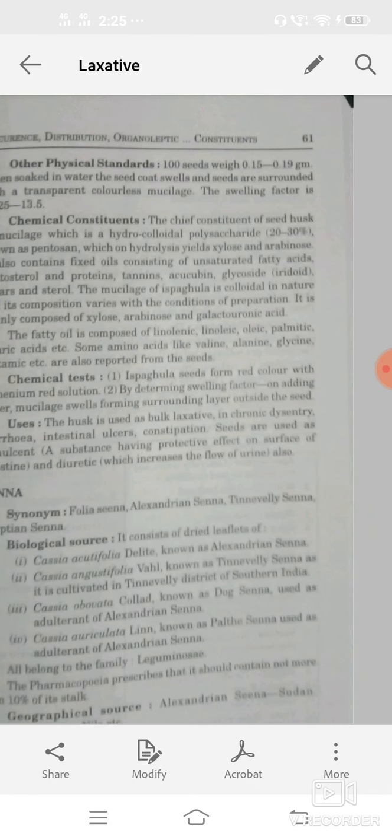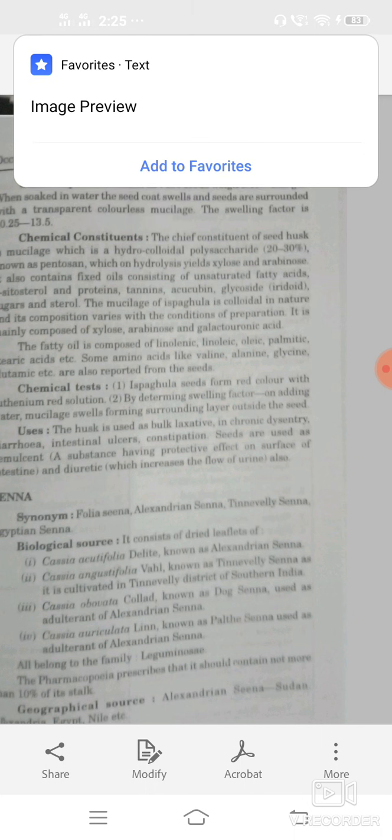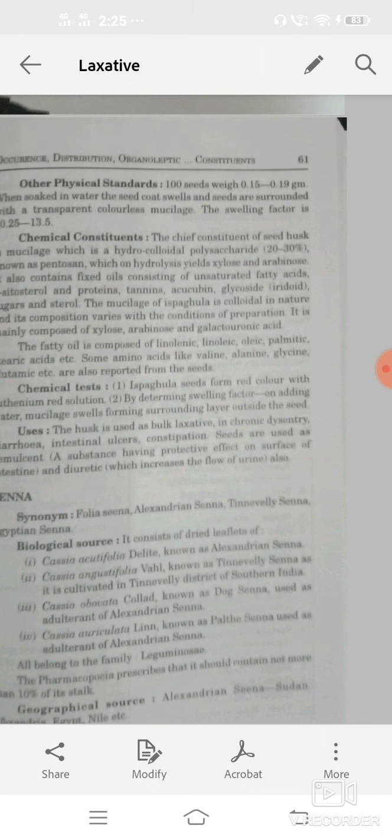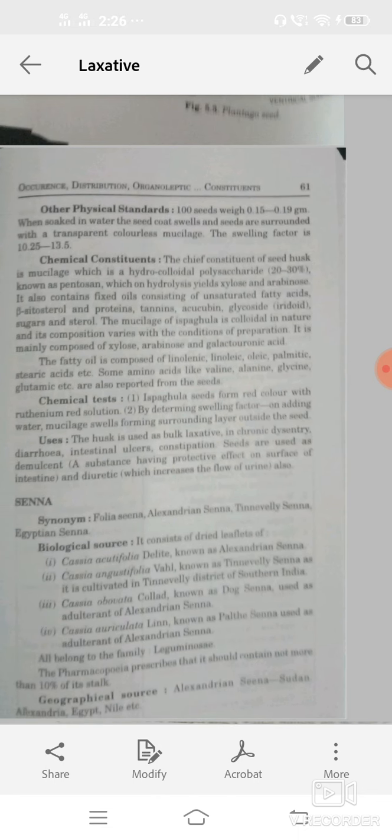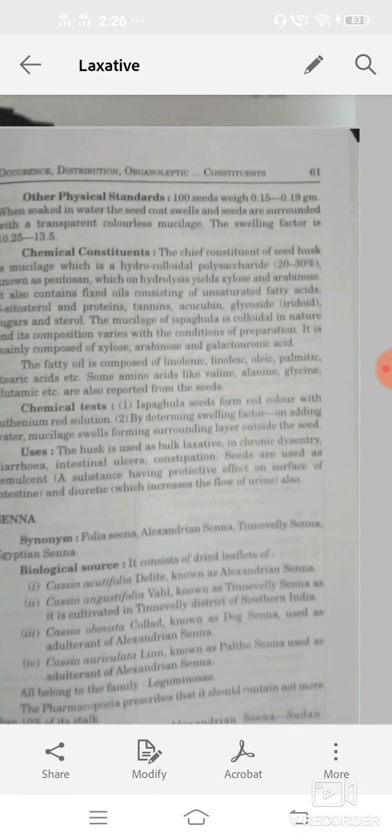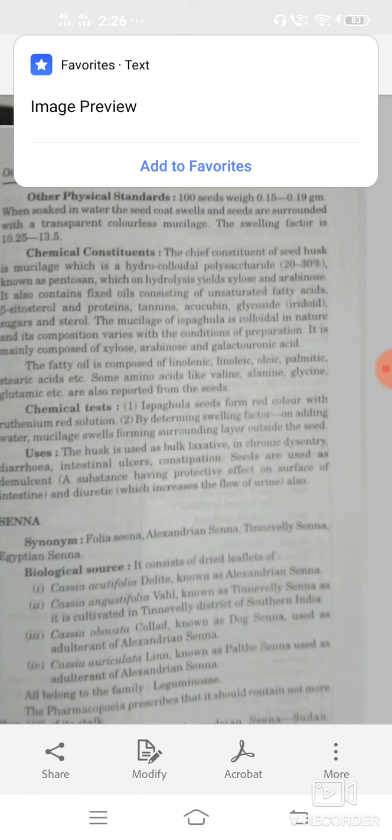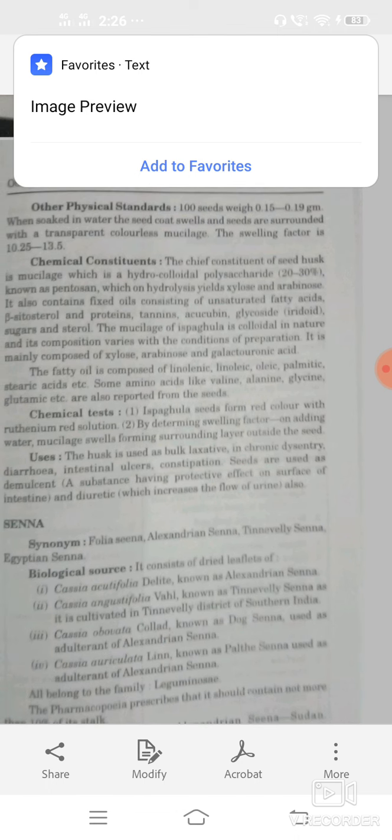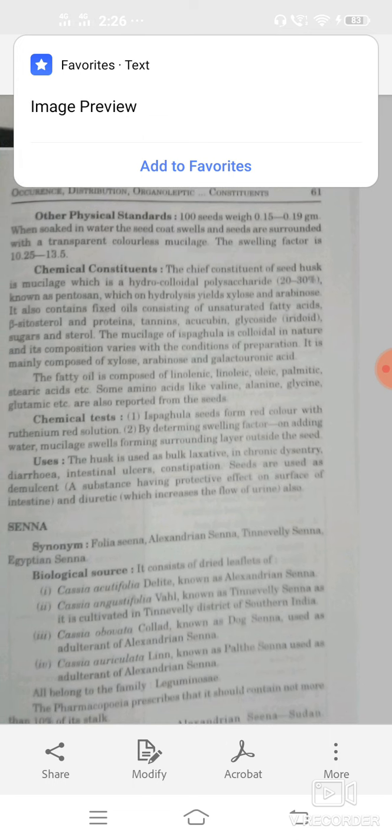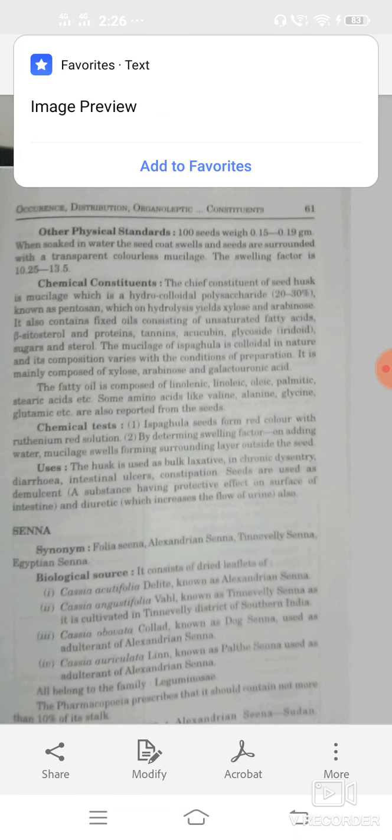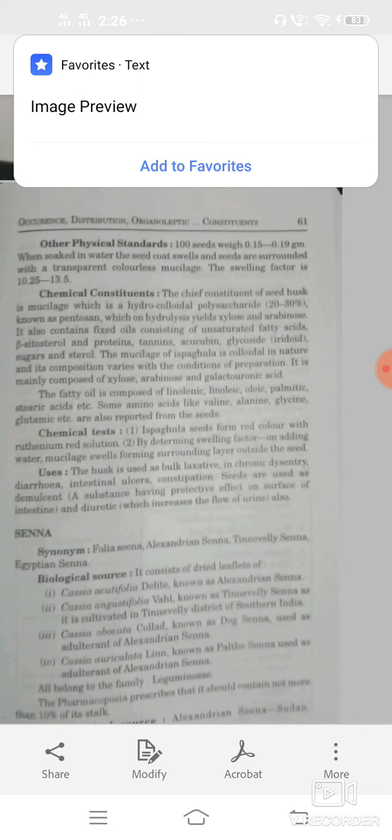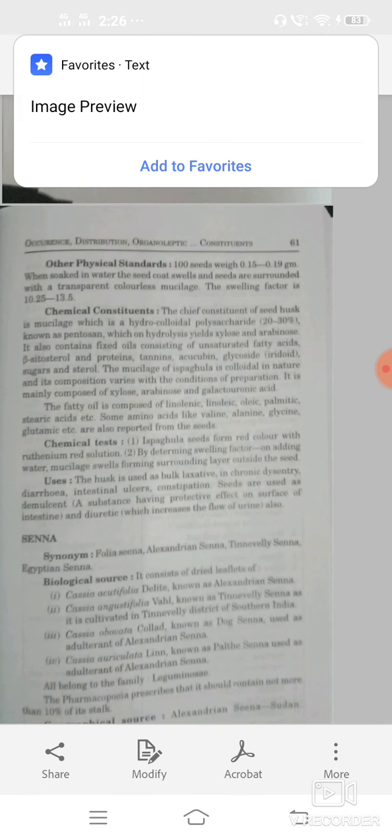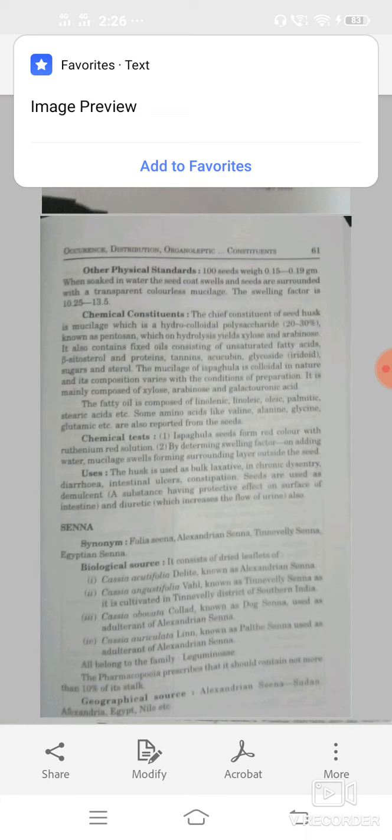Chemical test: isabgol seeds form red color with ruthenium red solution or by determining swelling factor on adding water that can swell and surround a layer around or outside the seeds. Main use as a bulk laxative in chronic dysentery, diarrhea, ulcer, constipation or seeds as a demulcent that have protective effect on the surface of intestine or as a diuretic which increases the flow of urine.